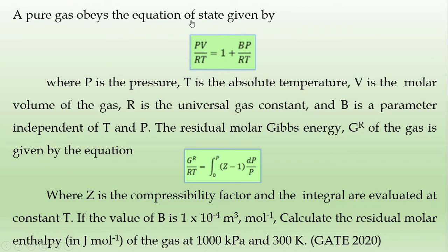A pure gas obeys the equation of state given by PV/RT = 1 + BP/RT, where P is the pressure, T is the absolute temperature, V is the molar volume of the gas, R is the universal gas constant, and B is a parameter independent of temperature and pressure. The residual molar Gibbs energy GR of the gas is given by GR/RT = integral from 0 to P of (Z - 1) dP/P, where Z is the compressibility factor, and the integral is evaluated at constant temperature.